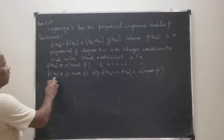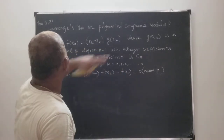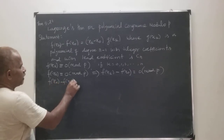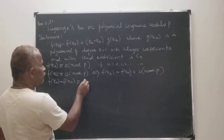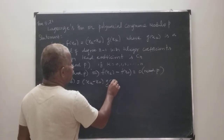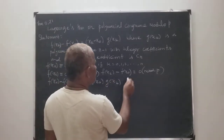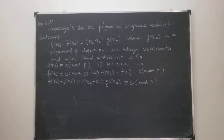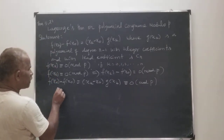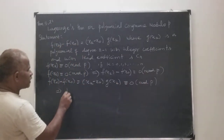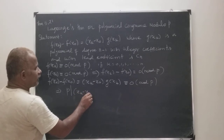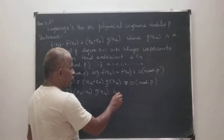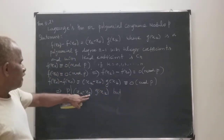Now, F of xk minus F of x0 is equal to xk minus x0 into G of xk, which is again congruent to 0 mod P. So therefore this means P divides xk minus x0 into G of xk.